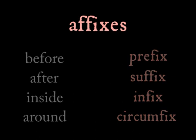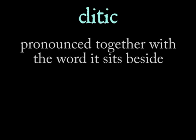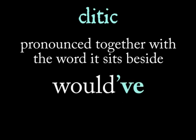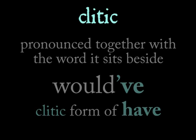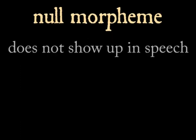Languages have other techniques at their disposal for expressing grammatical concepts. One of these is a clitic, which is kind of like a free morpheme and kind of like an affix. It sits alongside of, and is pronounced along with, the word that it grammatically relates to. A zero morpheme, or a null morpheme, is a morpheme that doesn't get pronounced.